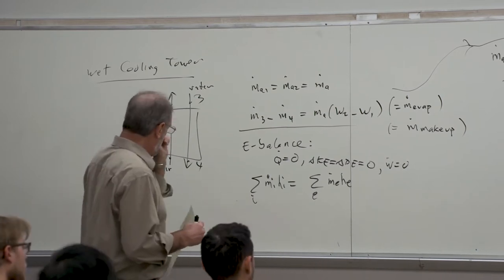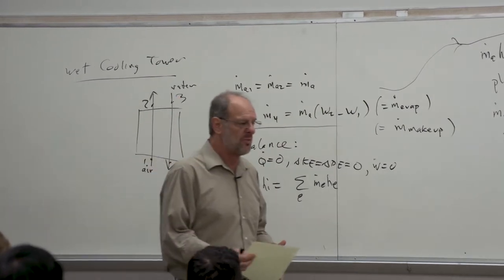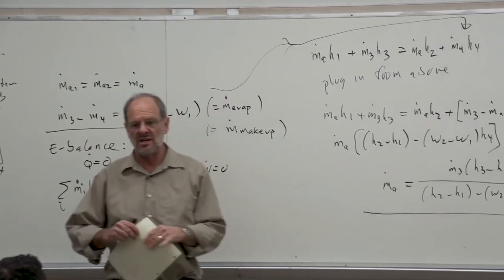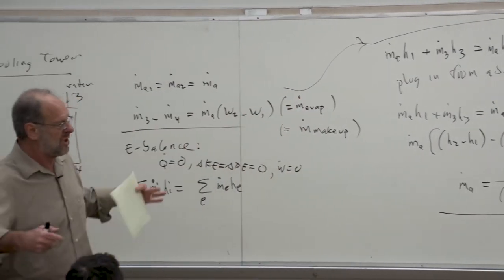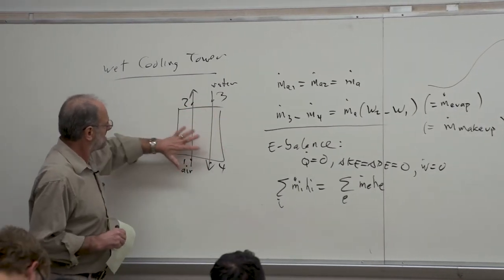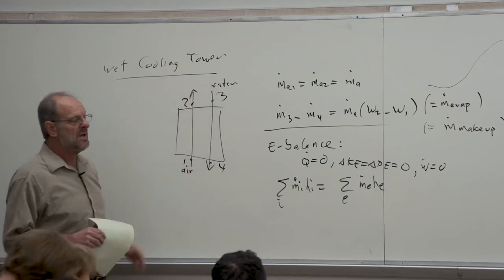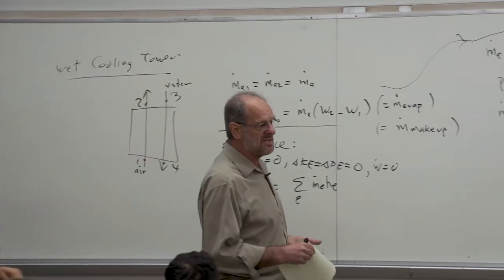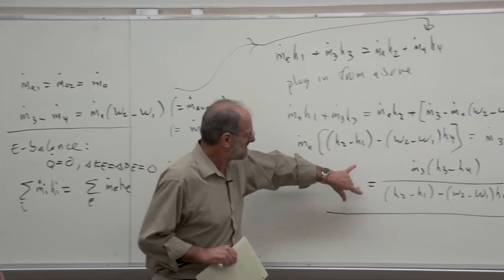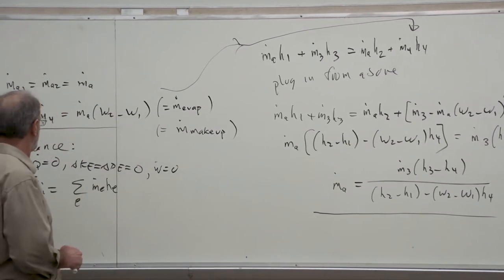So these two equations — the mass balance and the energy balance — become the two important equations we need. We know we have to provide an appropriate amount of makeup water, which could be huge. But also we need to size the fan that's blowing air across this particular cooling tower — even though the fan doesn't appear within our control volume, we still need to size it to provide the appropriate mass flow rate to satisfy this equation.